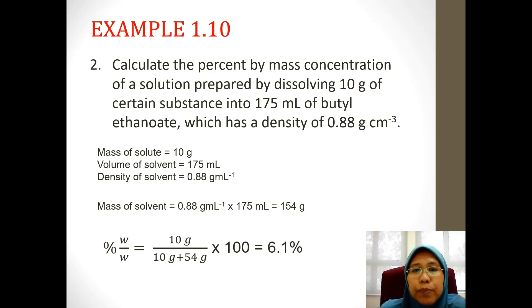Question 2, calculate the percent by mass concentration of a solution prepared by dissolving 10 grams of certain substance into 175 milliliters of butyl ethanoate, which has a density of 0.88 grams per centimeter cube. So we need to list down the information that we have. Mass of solute is 10 grams. Volume of solvent is 175. The solvent now is butyl ethanoate, not water. And the density of solvent given 0.88.